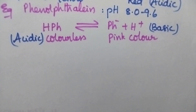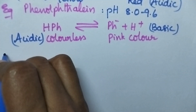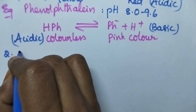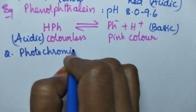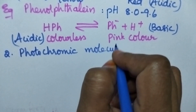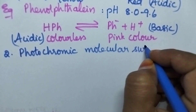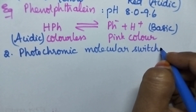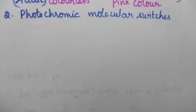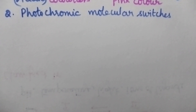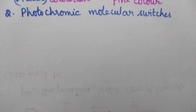Coming to the second category of molecular switches, they can be called as photochromic molecular switches. Photochromic molecular switches are the molecules which exhibit different colors in the presence of light radiation. They are capable of exhibiting different structures in the presence of light, and hence they exhibit a color change.